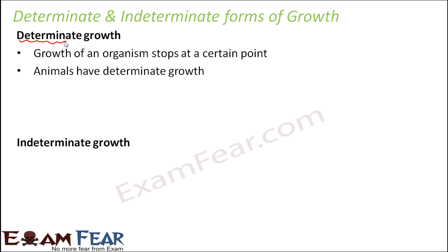Most animals have determinate growth. For example, human beings — when we were born, we were very small. Then we started growing; our size, height, and weight increased. The body parts also increased in their respective sizes. And finally, when we become adult, the size increases quite a bit compared to how we were born. But once we reach a certain size — around age 20 or 22 — after that there is not much growth. So most animals have determinate growth where they will not continue to grow throughout their life.